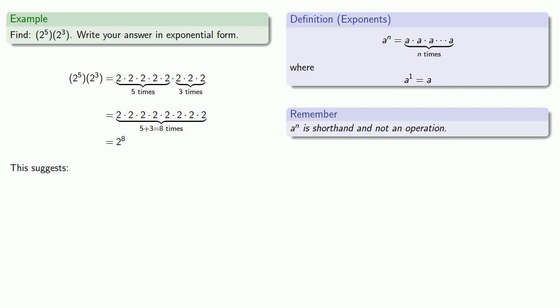And this suggests a useful rule of exponents. a to power m times a to power n is a to power m plus n. Notice that the base of the exponential expression a remains unchanged, while the exponent itself is the sum of the individual exponents.